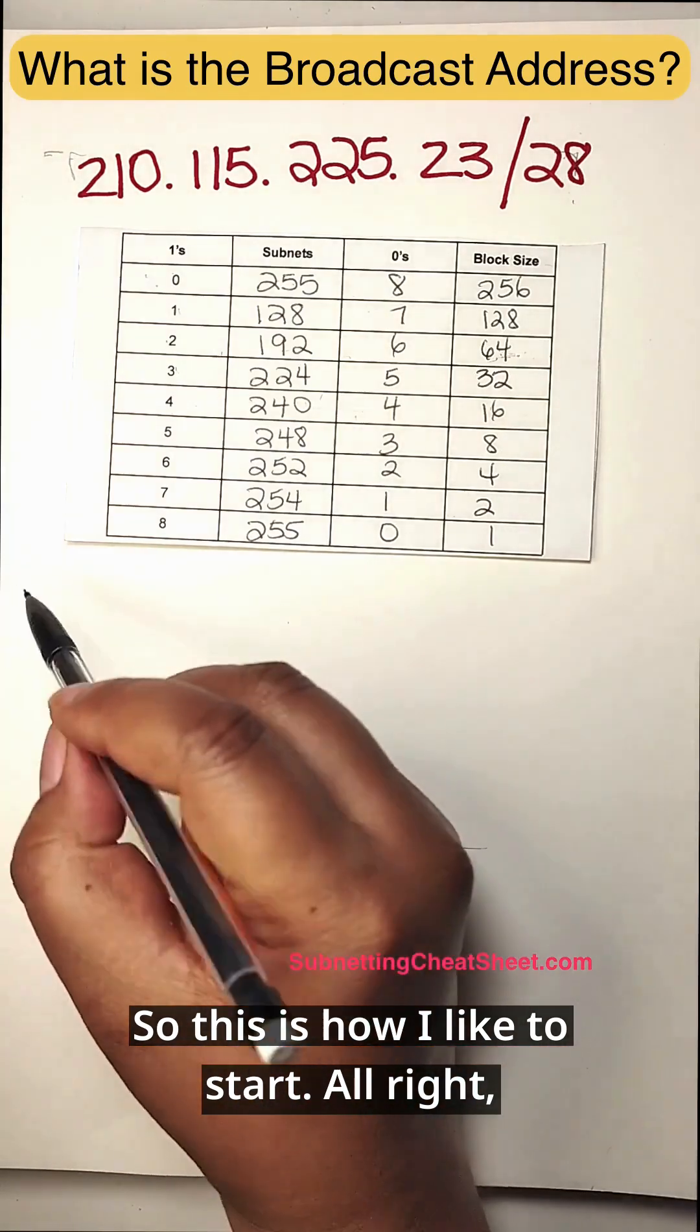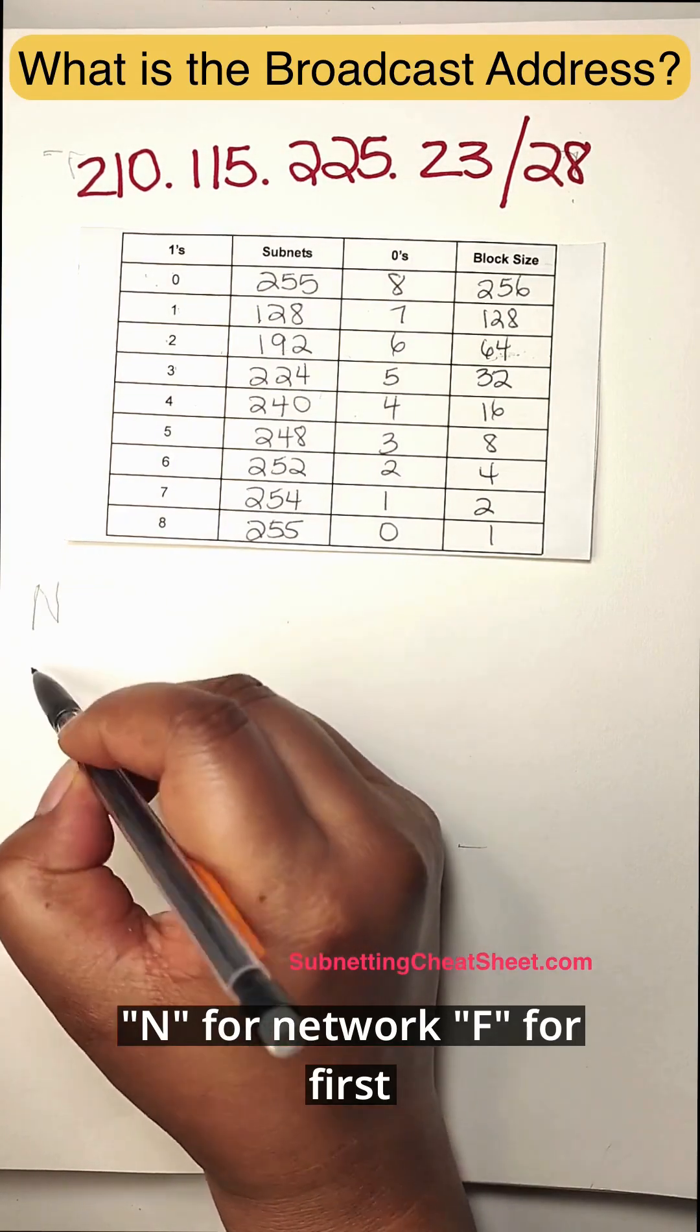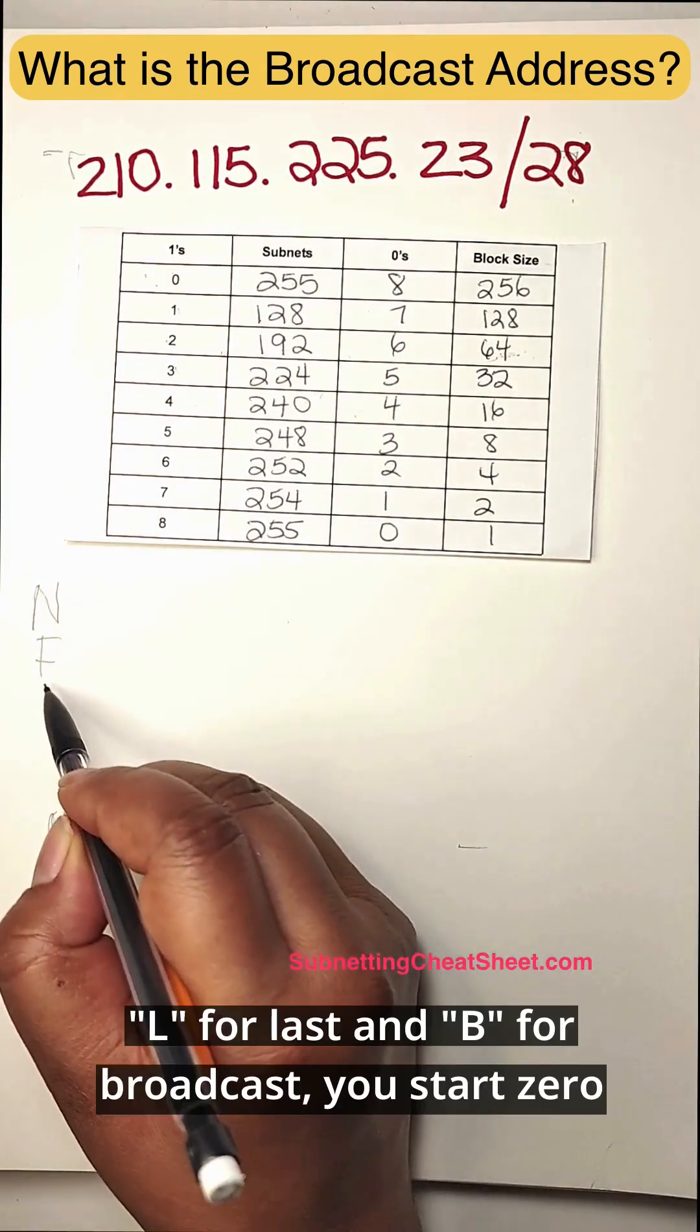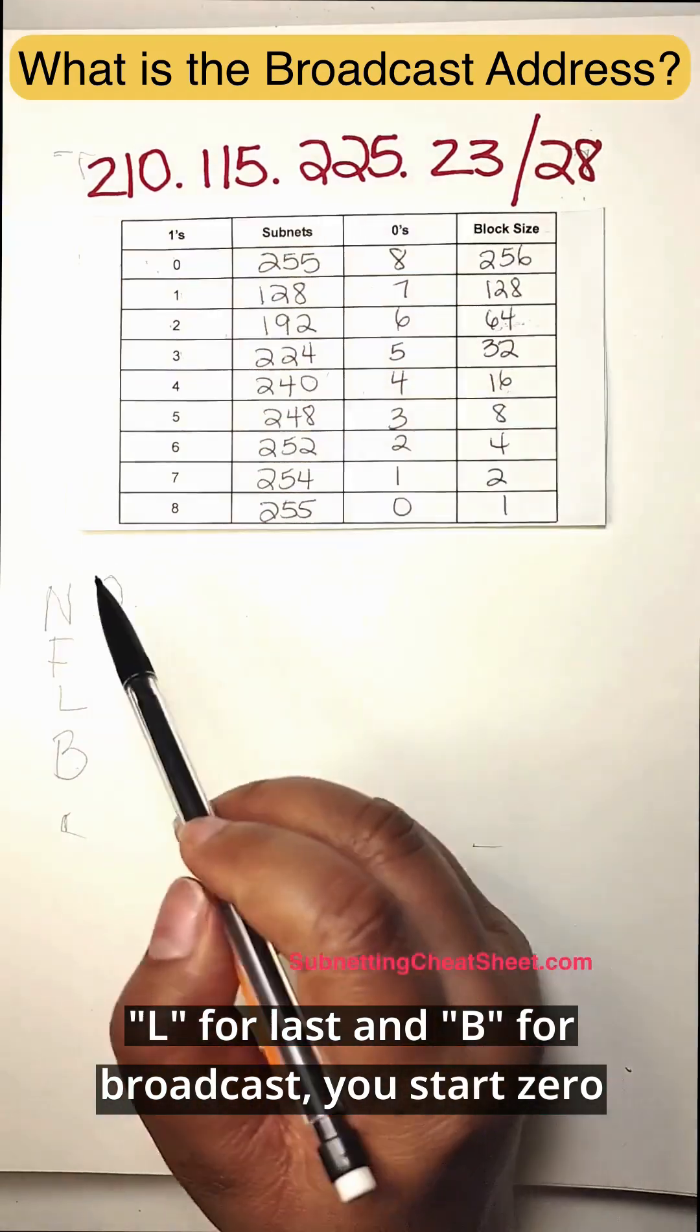So this is how I like to start. I'll write N for network, F for first, L for last, and B for broadcast. You start zero.